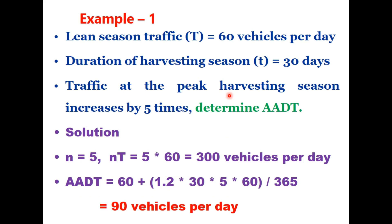For example, let lean season traffic T = 60 vehicles per day, duration of harvesting season small t = 30 days, and peak traffic is 5 times lean traffic (n = 5). Then nT = 5 × 60 = 300 vehicles per day. AADT = 60 + (1.2 × 30 × 5 × 60) / 365 = 90 vehicles per day. That is the AADT for design of the pavement.